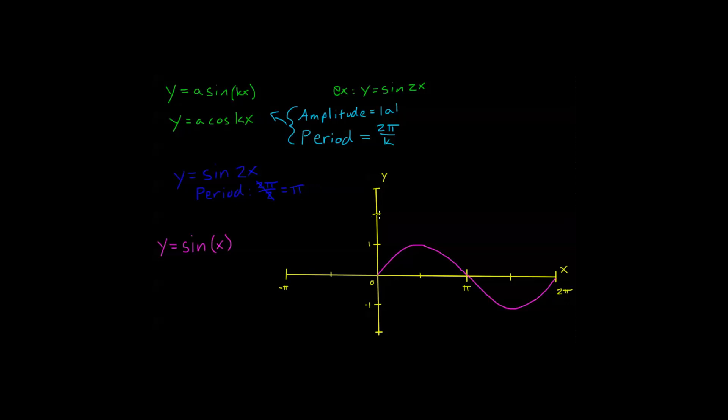Now, what does that mean when I'm graphing? That means that I'm still starting at 0 with my sine graph, but I'm going to go all the way up, all the way back to the axis, all the way down, all the way back up, do my entire sine graph in a period of pi. So, my graph's going to be ending right here.